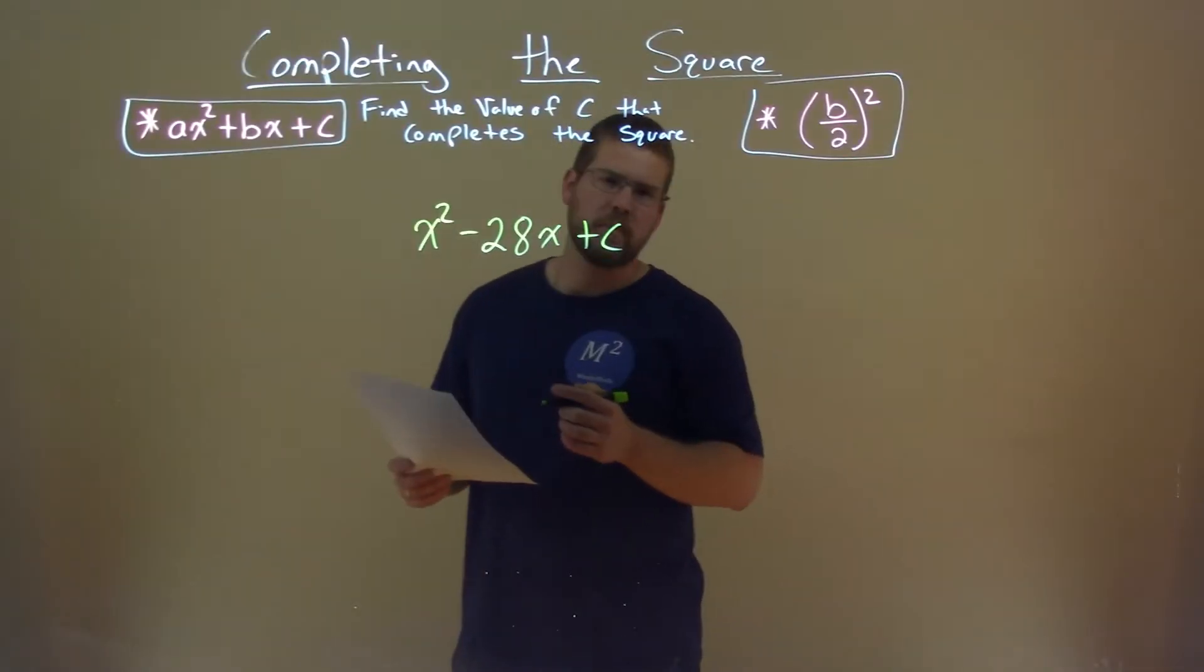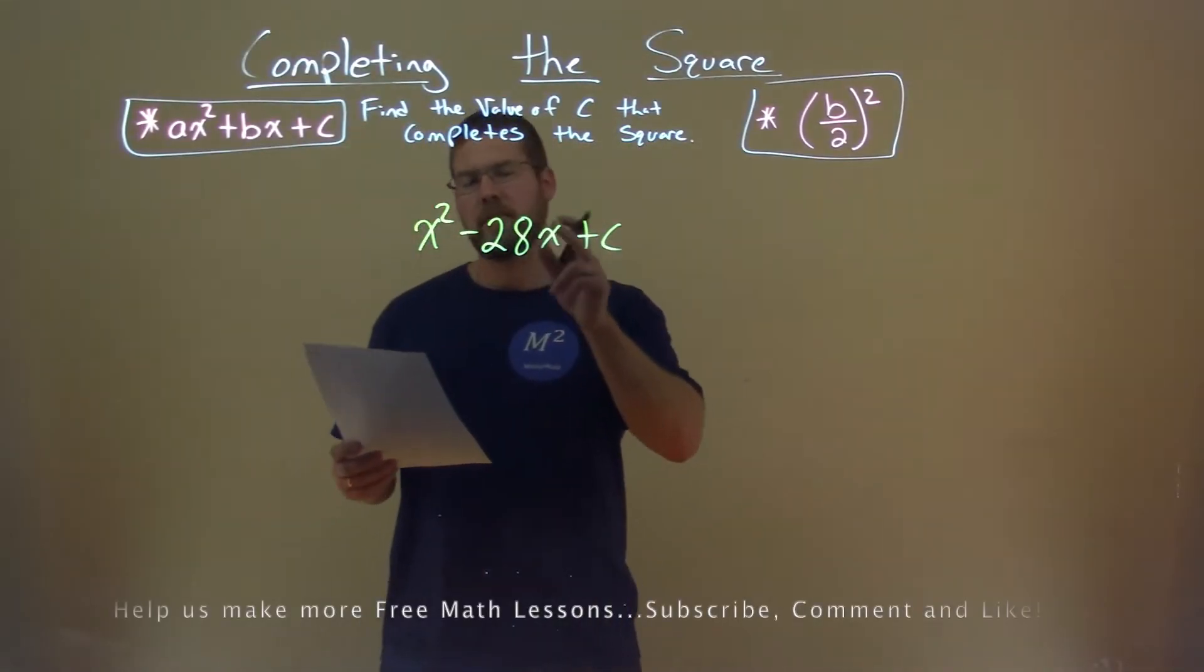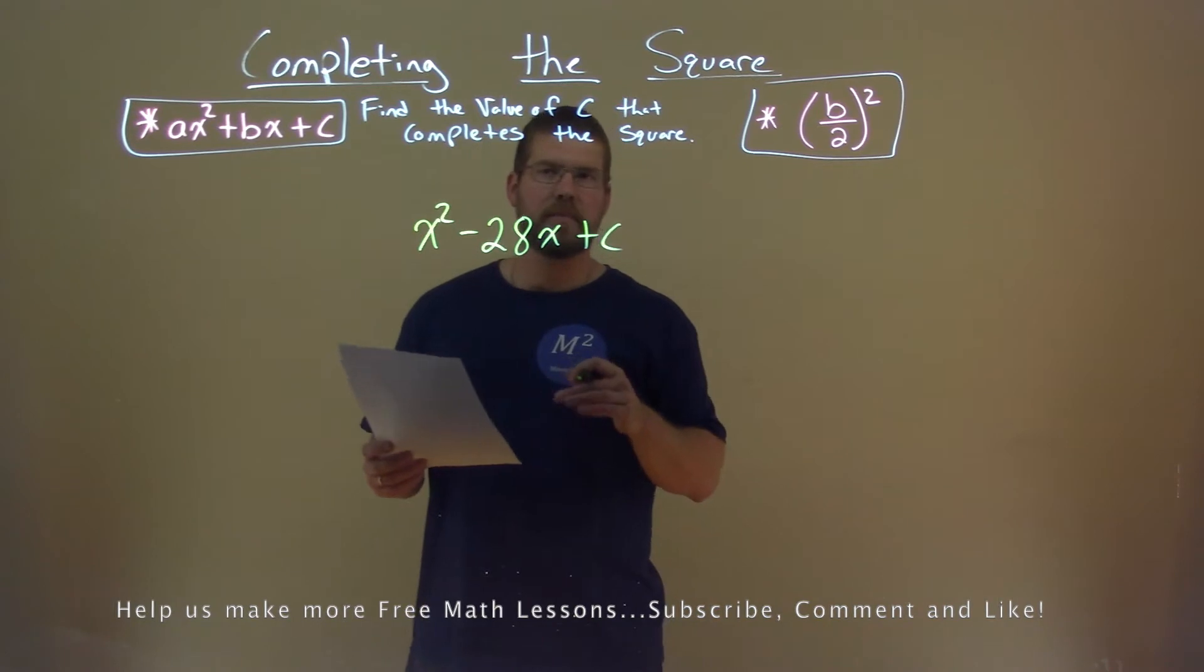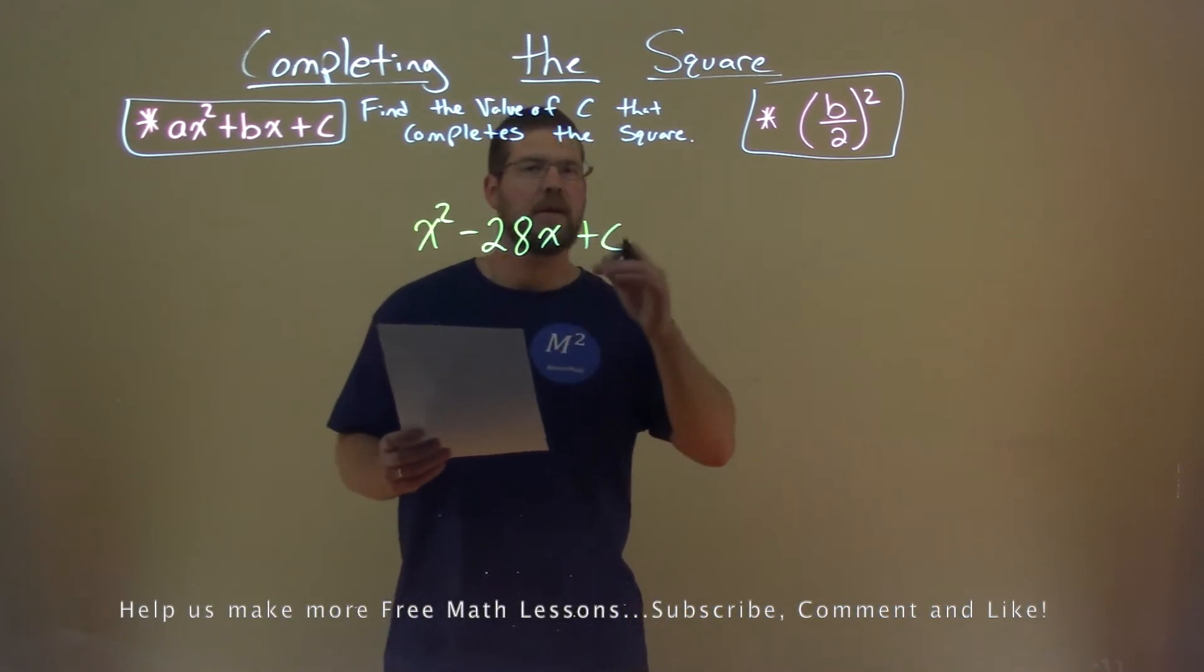We're given this problem right here, x squared minus 28x plus c, and we want to find the value of c that completes the square.